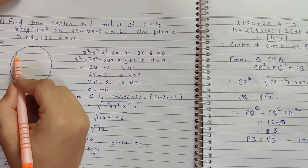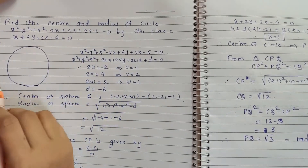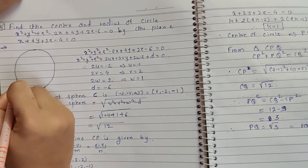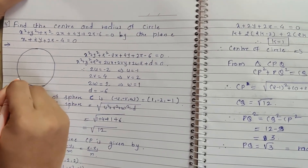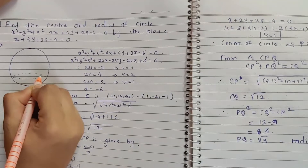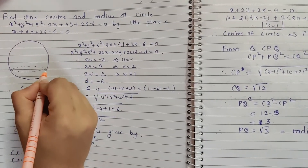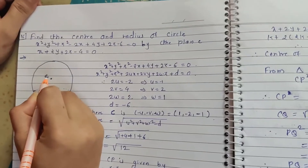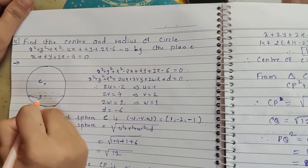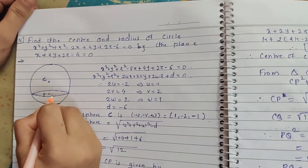First we will draw the sphere x² + y² + z² - 2x + 4y + 2z - 6 = 0. This sphere is intersected by a plane, and the intersection gives us a circle. Keep in mind: the intersection of a sphere with a plane at any angle gives a circle. Point C is the center of the sphere, and point P is the center of the circle.